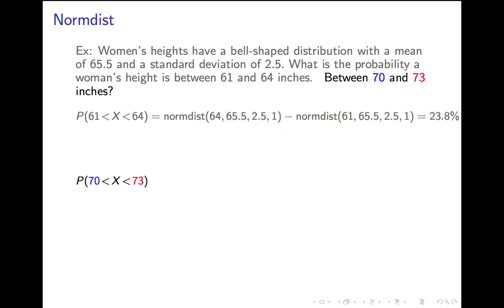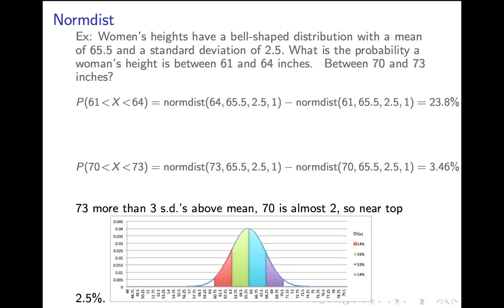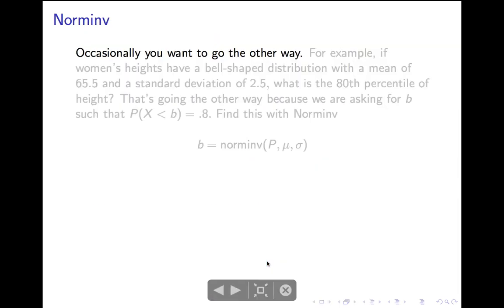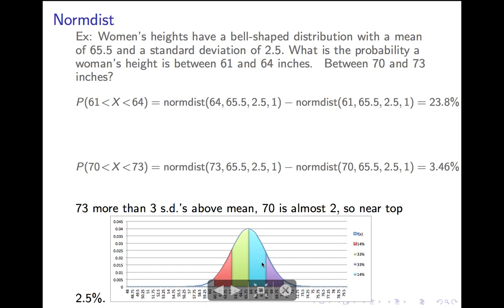Let's do another example. Between 70 and 73 would be normdist of 73 minus normdist of 70. Otherwise, everything's the same. That works out to 3.46%. Let's see if that's reasonable. 70 is well into the purple. 73 is quite a bit above that.